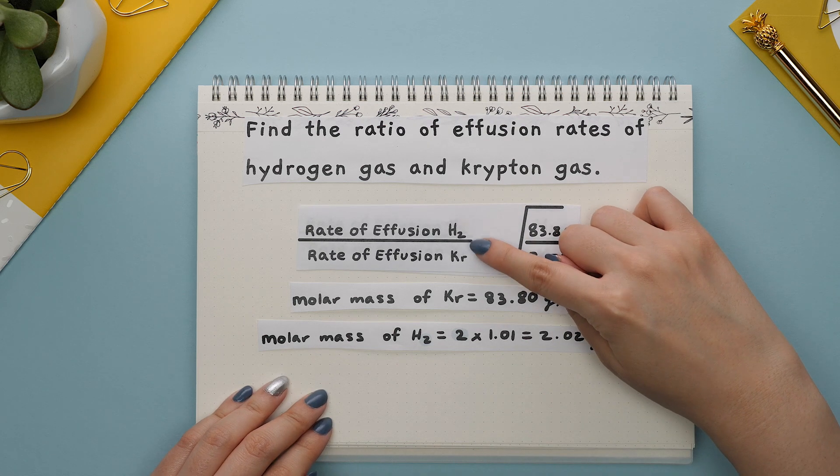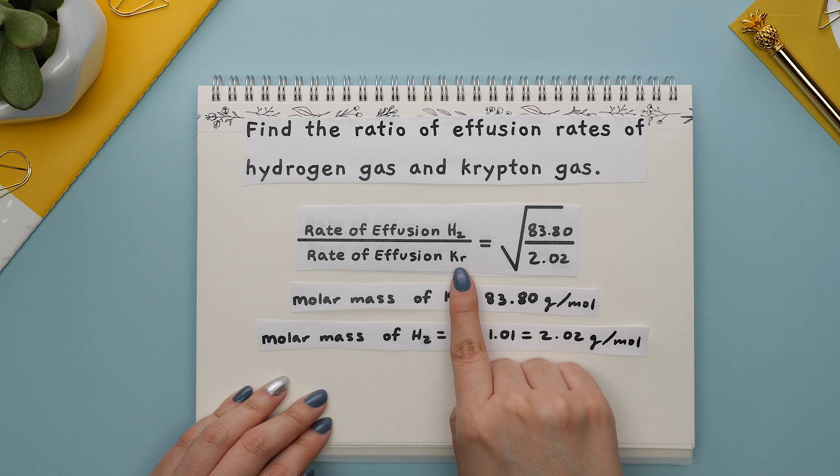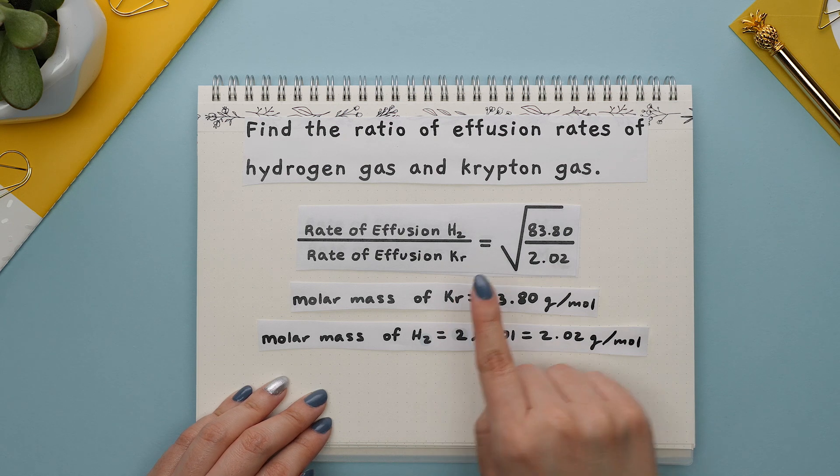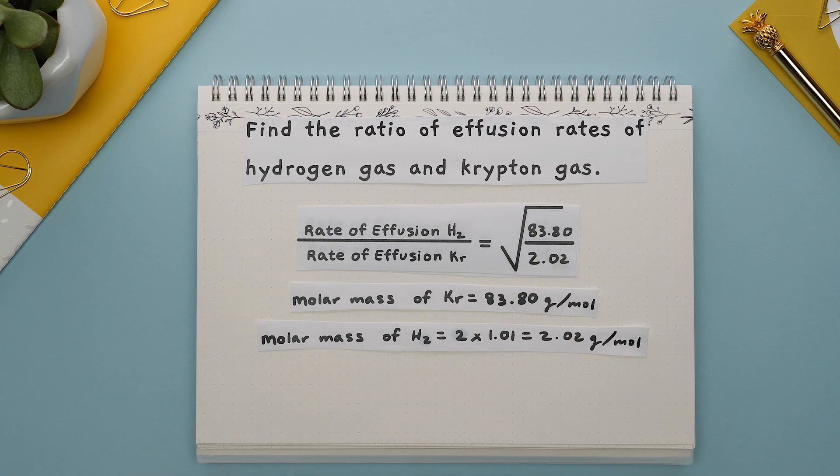Now we are not given the rate of effusion for hydrogen gas or krypton. We have two unknowns. This is fine because the question asks us to find the ratio of effusion rates so we are trying to find this.